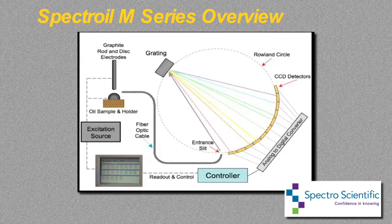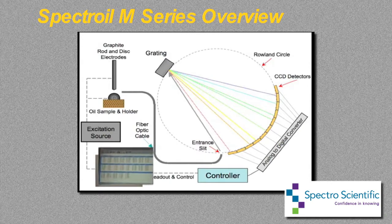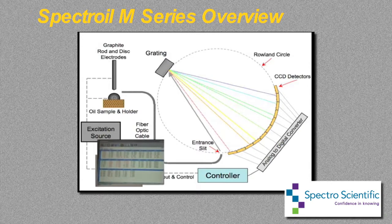The light is collected by a fiber optic and transmitted to the other main component of the Spectroil, the optical system. The optical system separates and resolves the emission from the excitation to its component wavelengths, which are consequently measured by the readout system.